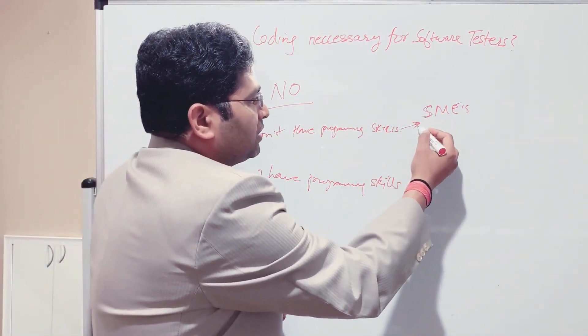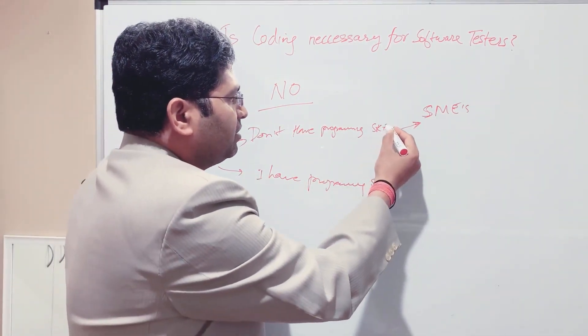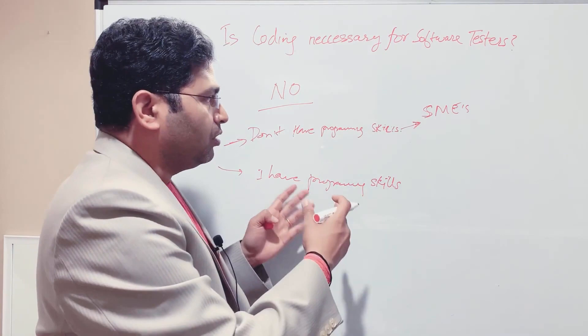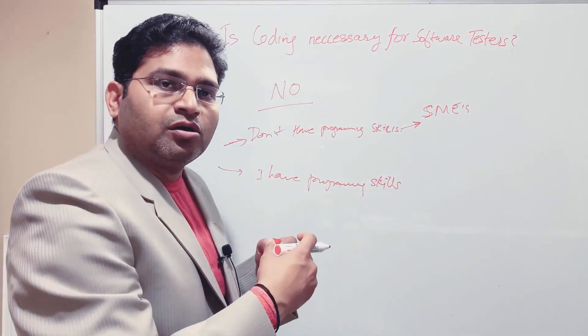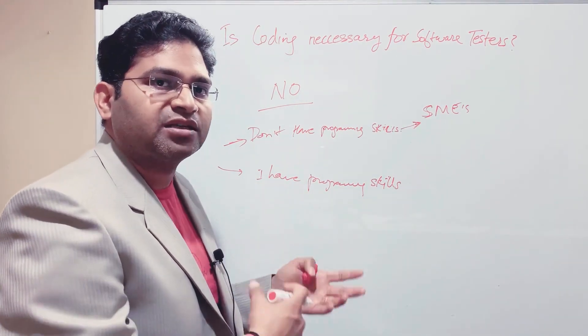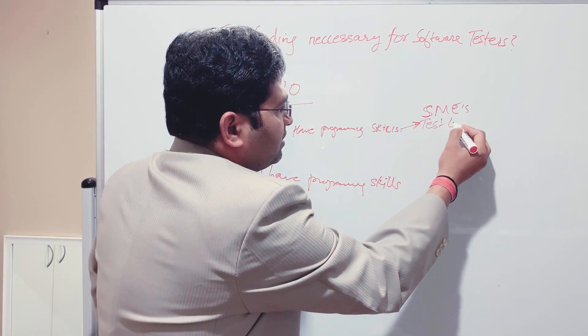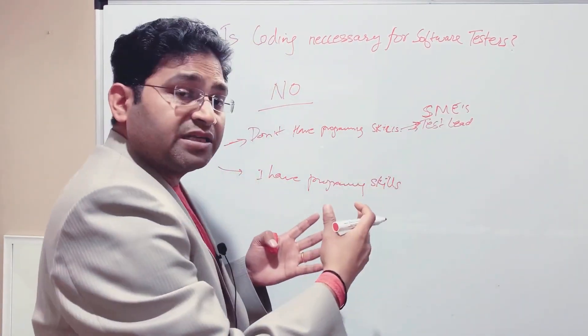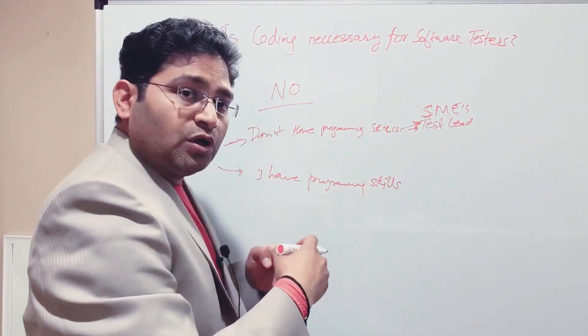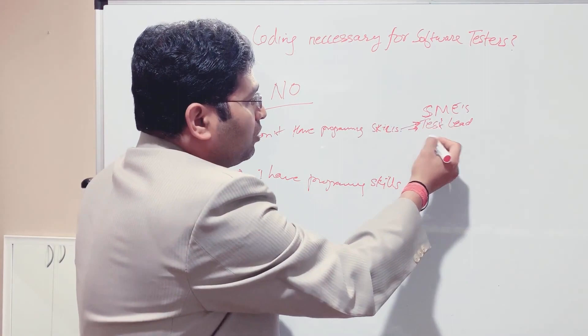SMEs are subject matter experts who basically know most of the key aspects of that particular application or product. How the product works, how it is integrated with third party systems. Once you become an SME, you can be the lead for the team. Team leads, if you are an automation team lead, you'll be leading the automation team or SDET team to ensure that manual test scripts are being converted into automation scripts and helping in expediting the overall testing. But once you are an SME, you can go for a test lead position. The key things you need to ensure here is you have good domain knowledge, good communication skills, and analytical thinking capabilities.